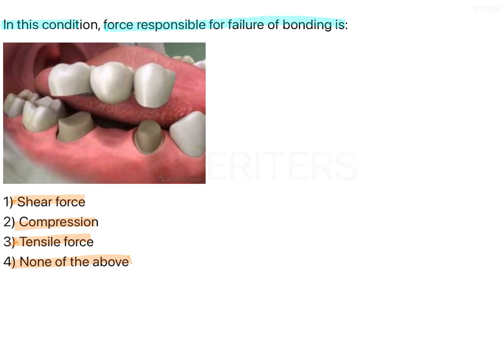There is a 3-unit bridge shown in the given image. This bridge is going to be cemented on the abutment, and the bond between them is called shear bond.